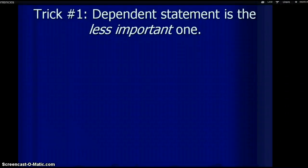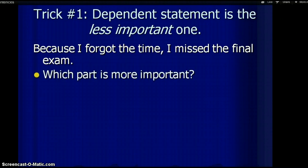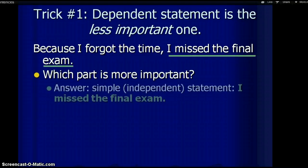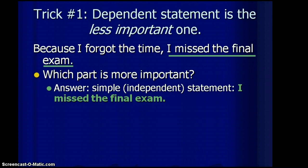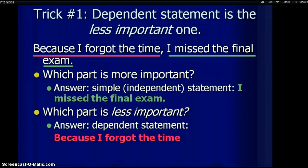Trick number one is that the dependent statement, or dependent clause, is the less important one out of the two. So let's look at an example of where one clause is less important. In this sentence, because I forgot the time, I missed the final exam. Which one is more important? That's right. Your simple or independent statement, I missed the final exam, is the more important statement. And so, which one would be the less important statement? Yeah, the only one that's left, because I forgot the time.